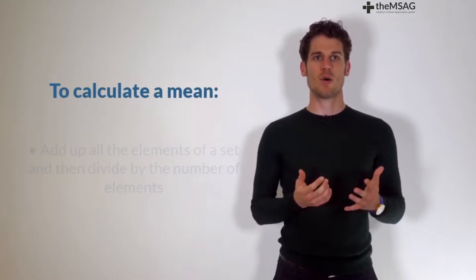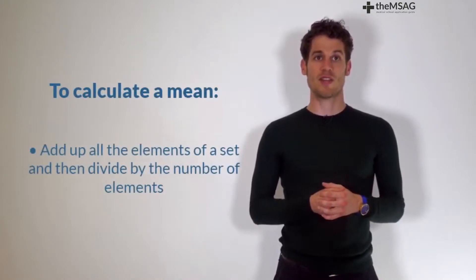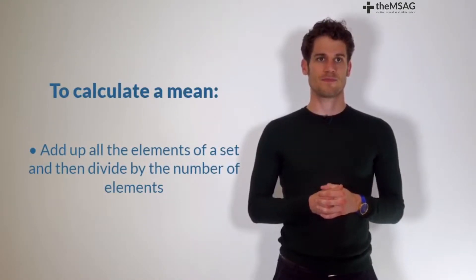To calculate a mean, simply add up all of the elements of a set and then divide by the number of elements of that set.